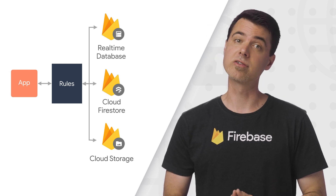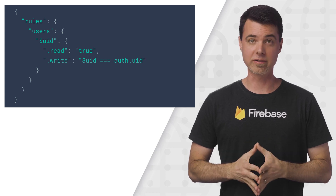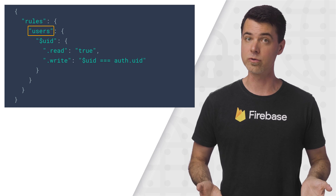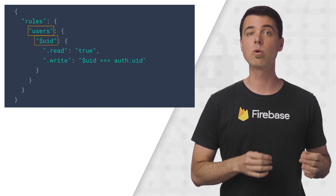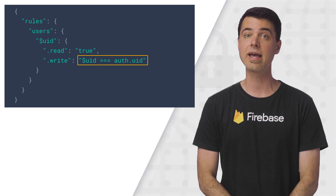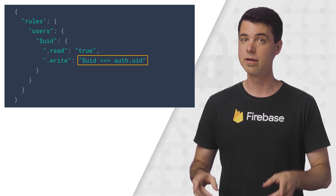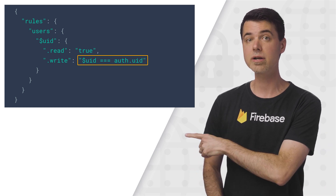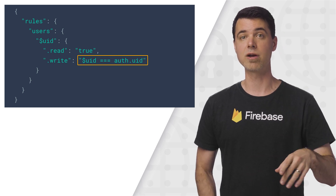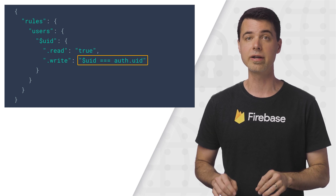They both might feel similar to JavaScript. For real-time database, the rules are formatted using JSON. You can see here that you identify a node in the database, such as users, with possible wildcards to match any child node. Then apply conditions on that to indicate how the data at that node may be read and written. In this case, we're saying that anyone can read any child node under users, but only an authenticated user may write the child node with the same ID as their own UID assigned by Firebase authentication.